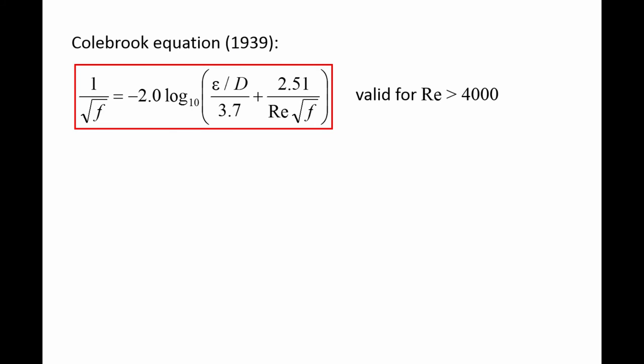Using experimental data, an empirical formula for calculating the friction factor for turbulent flows has been developed. This formula is called the Colebrook equation, and it relates three dimensionless quantities: the Darcy friction factor f, the relative roughness epsilon over d, and the Reynolds number. This equation works well for flows with a Reynolds number greater than 4,000. Notice that it is not possible to solve the Colebrook equation explicitly for f.